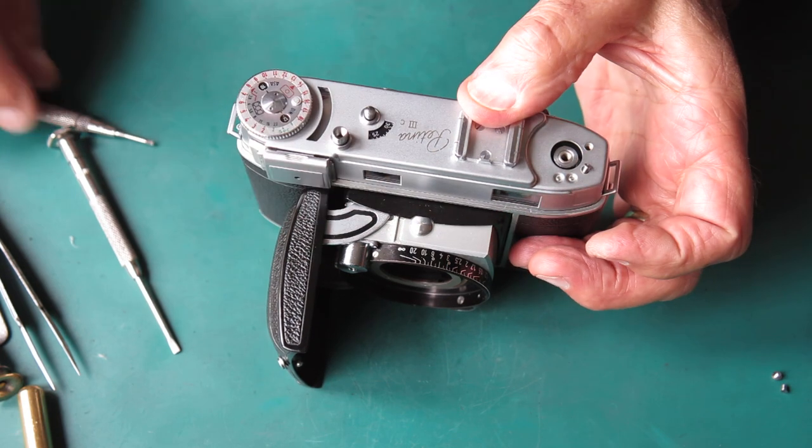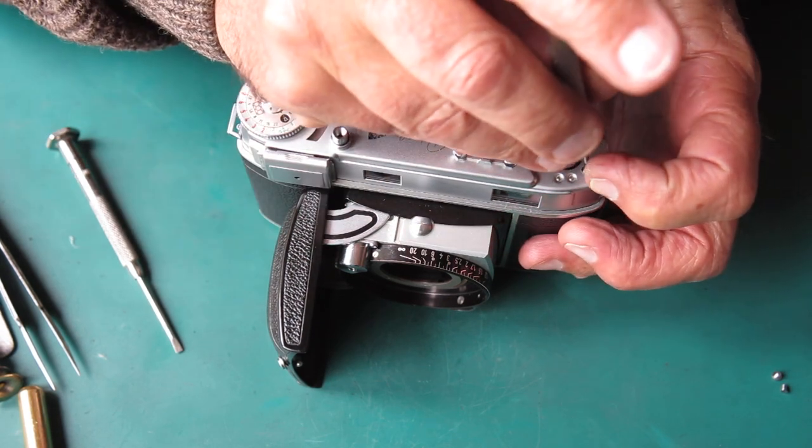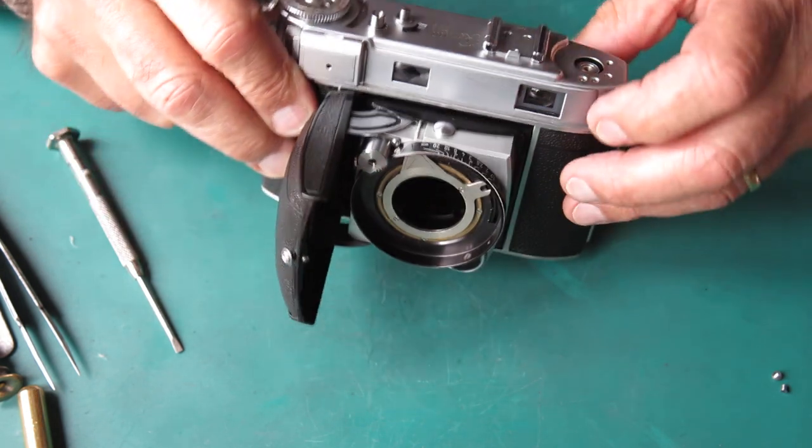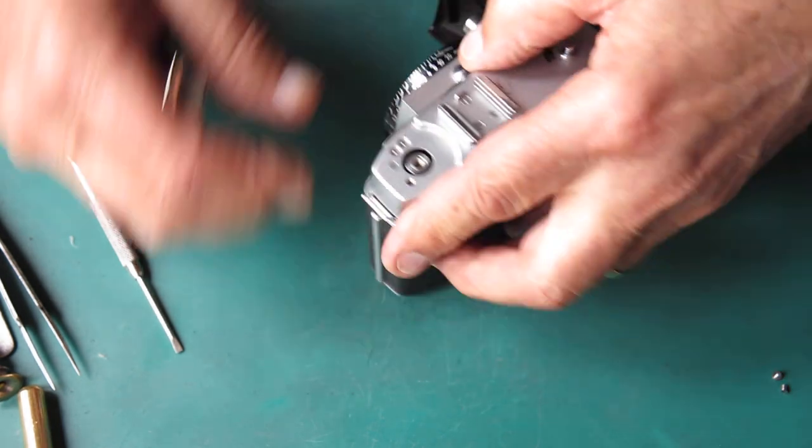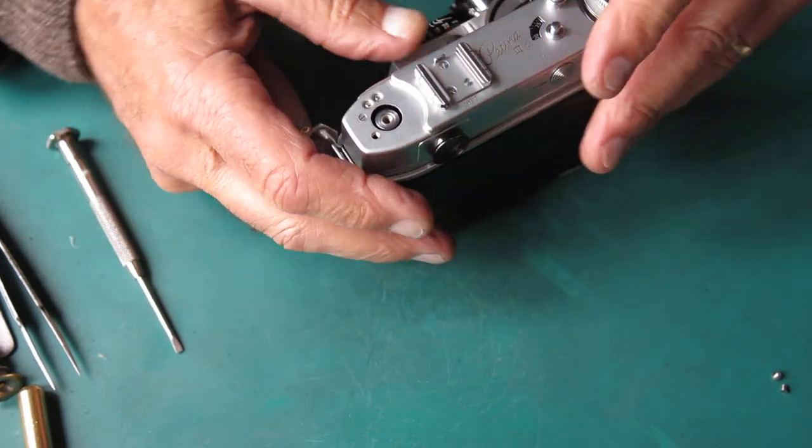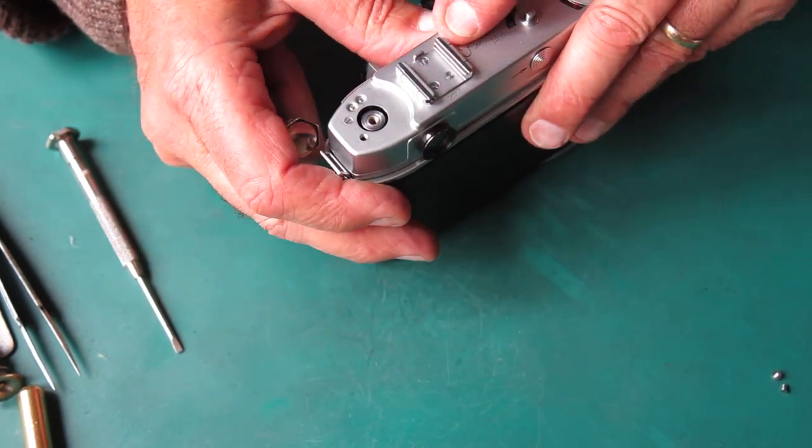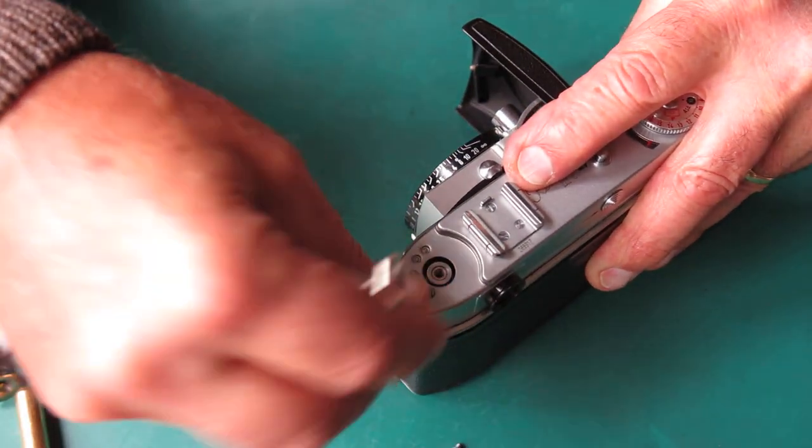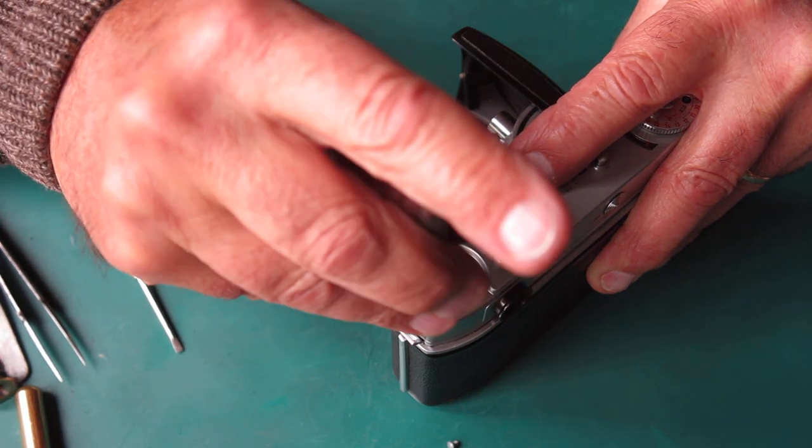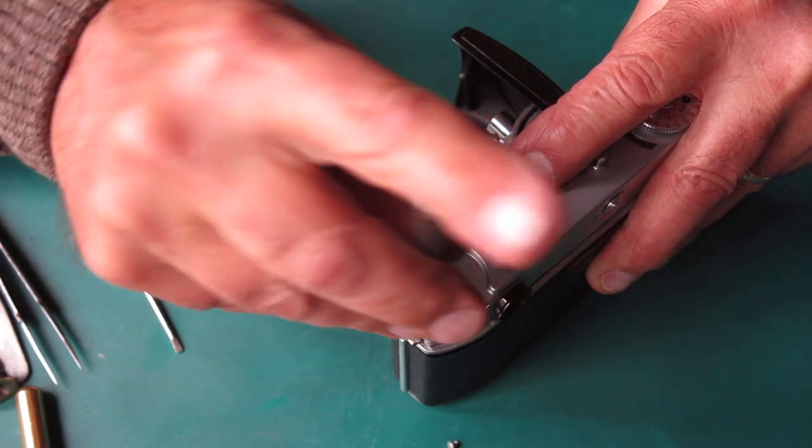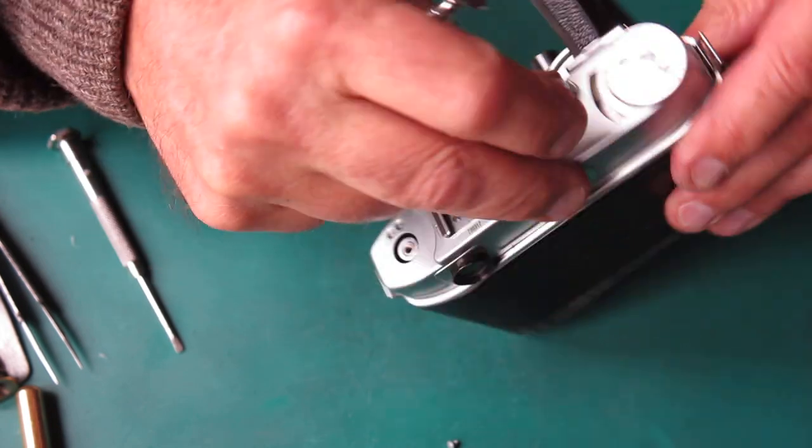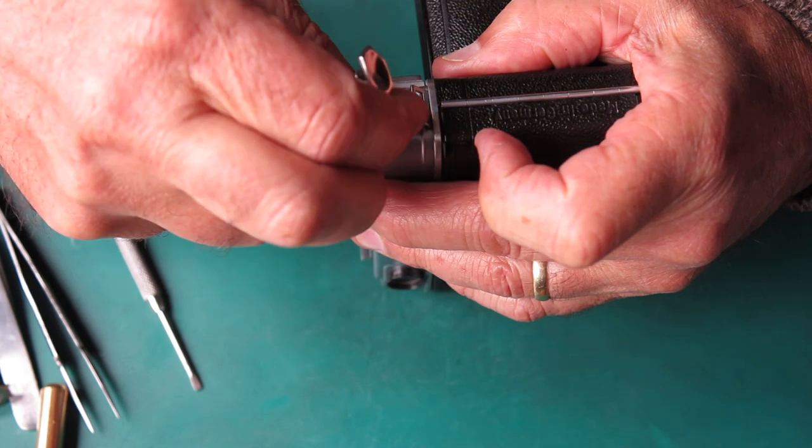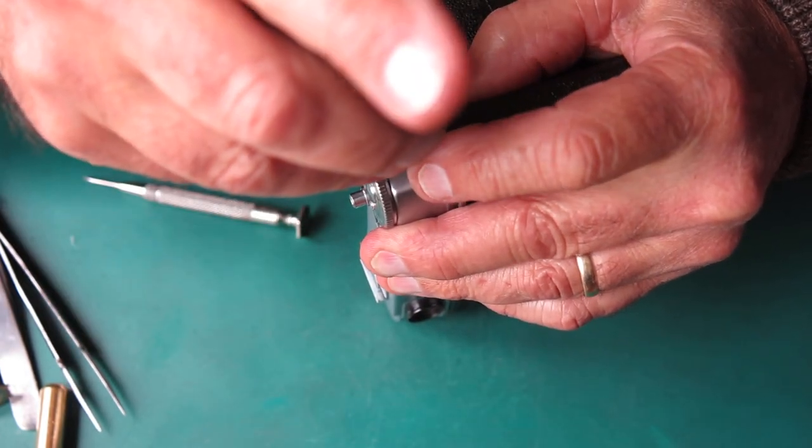If you get the adjustment wrong, you can get that counter counting two frames with each swing of the advance lever, which means it thinks it's got to the end of the film in half the time and locks your film advance. Your frame counter will say you're back at number one, that you've used all your film. The film advance will be locked, but in practice you'll have only got probably 18 shots.